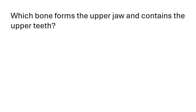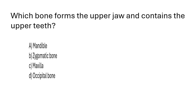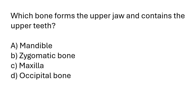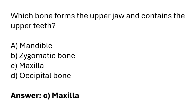Which bone forms the upper jaw and contains the upper teeth? Mandible, zygomatic bone, maxilla, occipital bone. The correct answer is option C: the maxilla bone forms the upper jaw and contains the upper teeth.